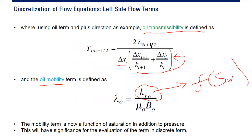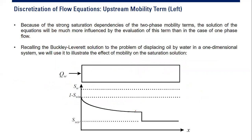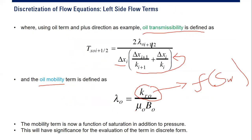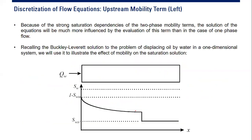Since mobility is a function of relative permeability, and relative permeability is a function of saturation, this has significance for evaluating the term in discrete form. We will continue this very interesting topic in the next video. Thank you.